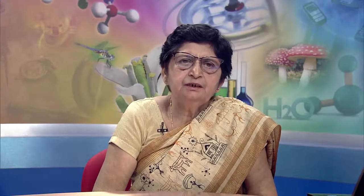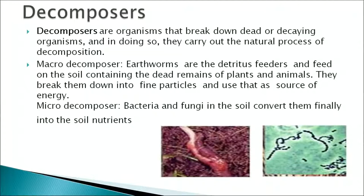The most important biotic components are the decomposers. Decomposers are organisms that break down dead and decaying organisms, carrying out the natural processes of decomposition. They are divided into two types: macro decomposers and micro decomposers. The macro decomposers are earthworms, which are detrivorous feeders that feed on soil containing dead remains of plants and animals, breaking them into fine particles. The micro decomposers are bacteria and fungi that convert organic matter finally into soil nutrients.